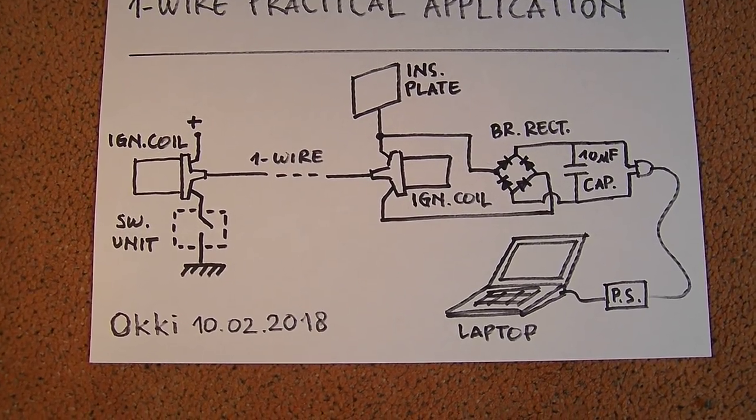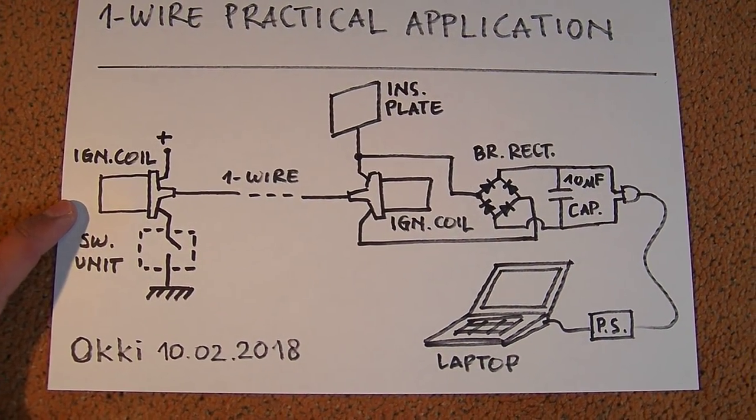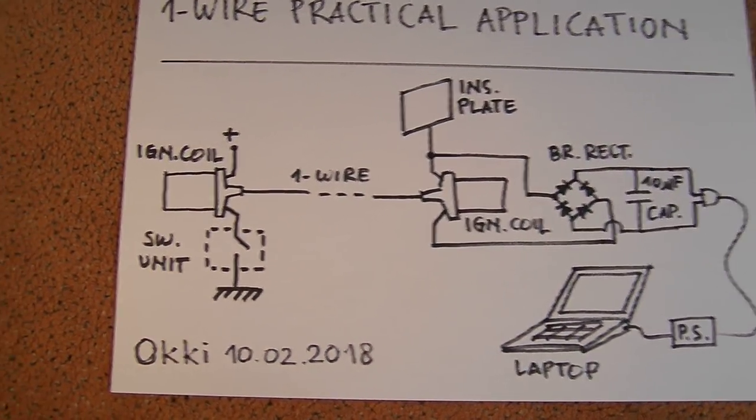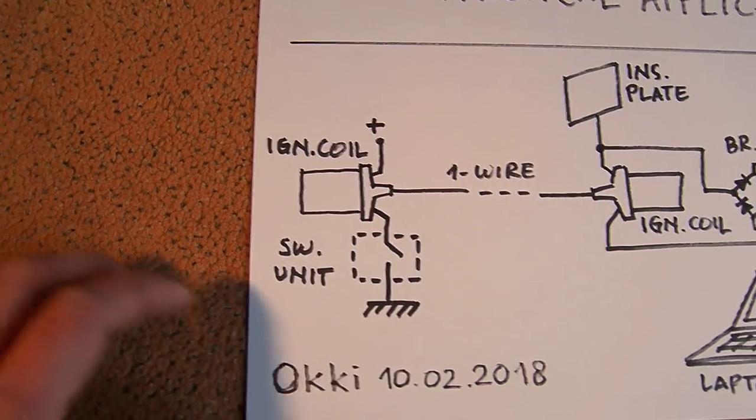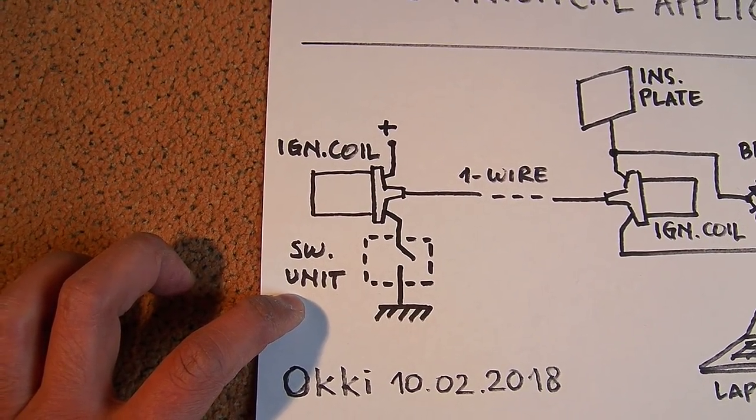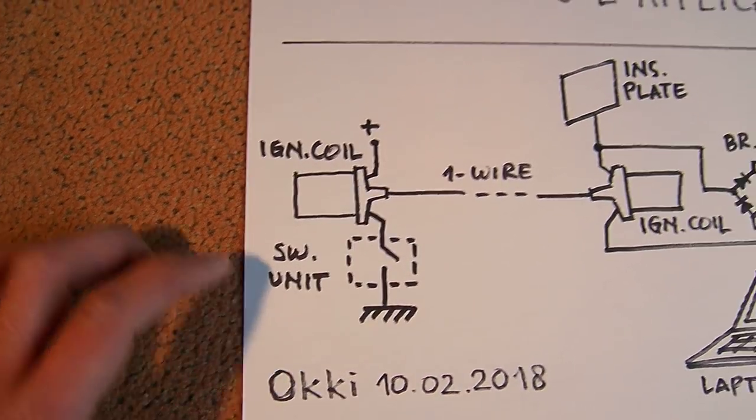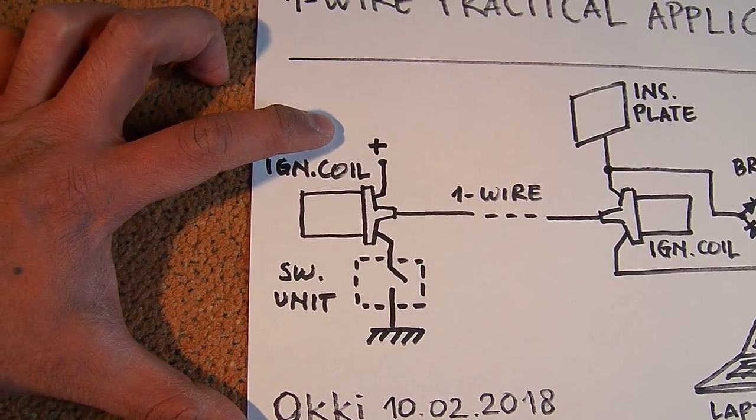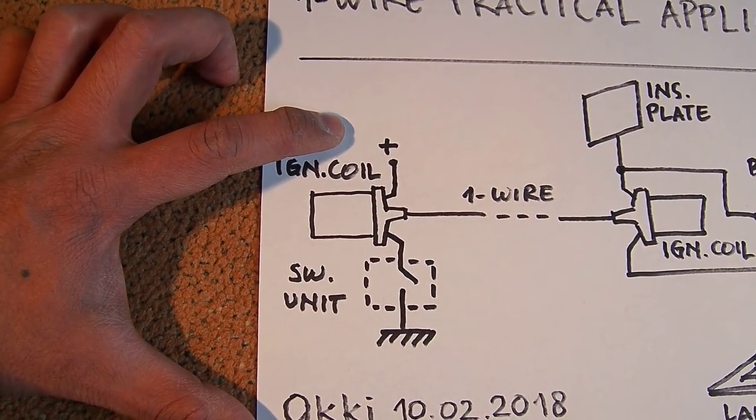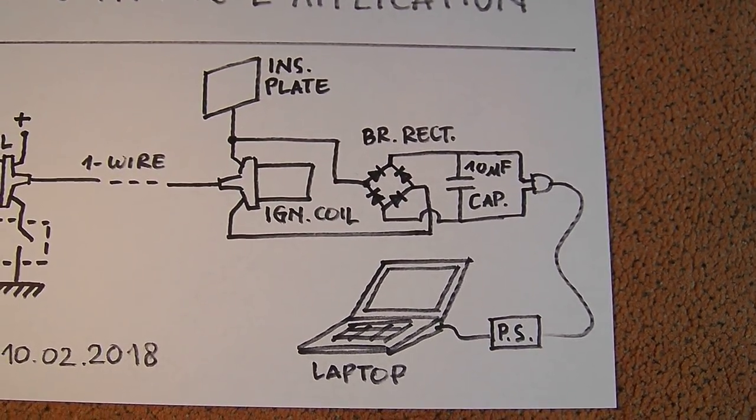This time I will use two ignition coils, one as a transmitter and the other one as a receiver. On the transmitter side I will have a switching unit consisting of a frequency generator and a MOSFET, and it will be powered by a variable voltage power supply.